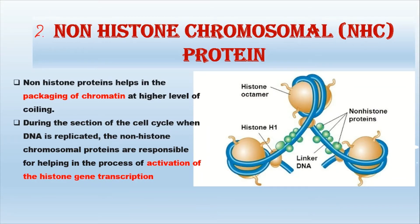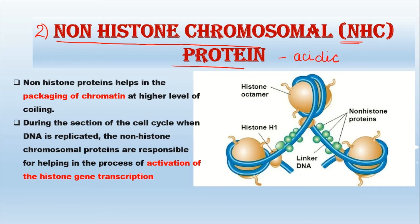Now let us talk about the second type of proteins, which are called non-histone chromosomal proteins, also called NHC proteins. These proteins are acidic in nature — unlike histone proteins which are basic, these are acidic. They have two main functions: the first is packaging of chromatin fibers at a higher level, which further helps in super coiling.